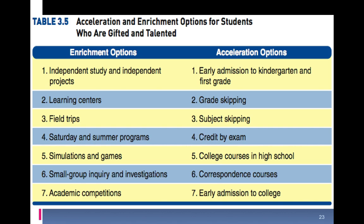There are enrichment and acceleration options for GT students. Enrichment options include independent studies or projects, learning centers, field trips, Saturday and summer programs, simulations and games, small group inquiry and investigation, and academic competitions. Acceleration options include early admission, grade skipping, subject skipping, credit by exam, college courses in high school, correspondent courses where a high school course is congruent with a college-level course, and early college admission.